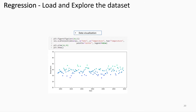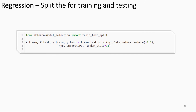Part of exploring data is through visualizations — typically each feature is compared with the target variable. In this case study, the feature (year) that will predict temperature is visualized using a scatter plot. The pattern in the visual does not show a linear relationship between date and temperature, but we'll continue with the steps of creating a prediction model to demonstrate the process. We then split the data into separate feature and target variables and create train and test subsets.